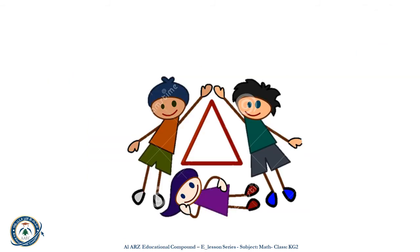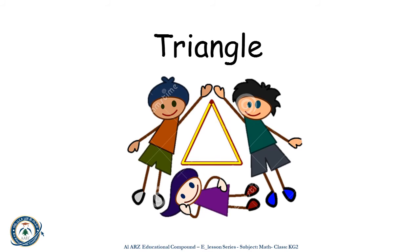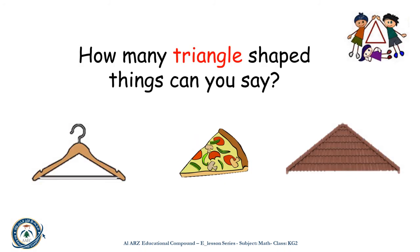I have three corners. I have three sides. Who am I? I am a triangle. Great job, KG2! How many triangle-shaped things can you say? Let's see the things that look like a triangle. A hanger, a pizza, a roof.